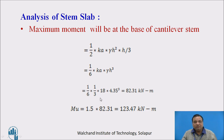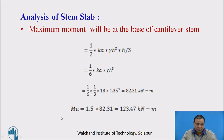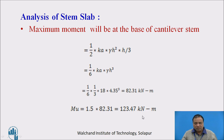Substituting the numerical values, the maximum bending moment at the base of the stem slab is 82.31 kilo Newton meter. The ultimate moment MU is 1.5 times M, which works out to 123.47 kilo Newton meter.